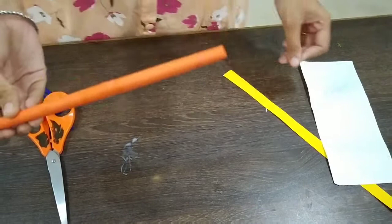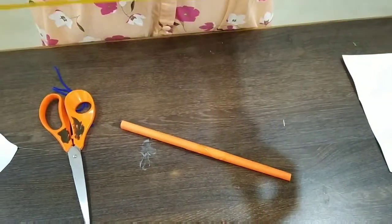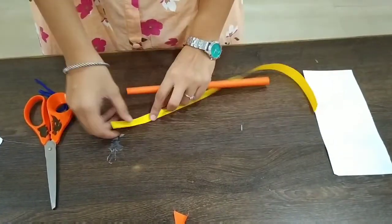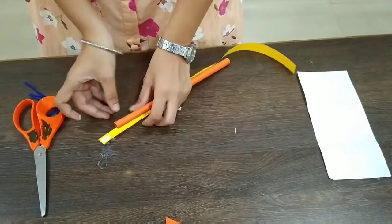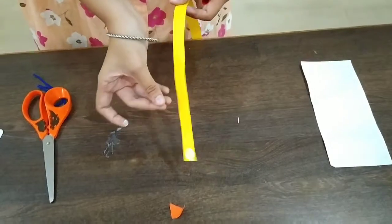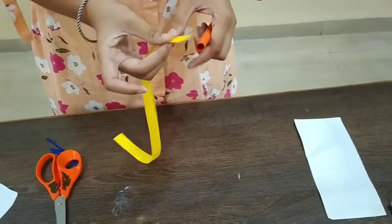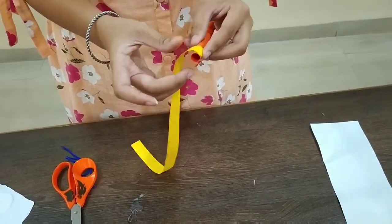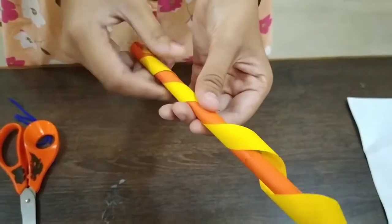Now what we are going to do next, we are going to take the yellow strip which we have given to you and we are going to stick it. Take a point, okay, and I'm taking this way. You will stick this way and you will see this way.